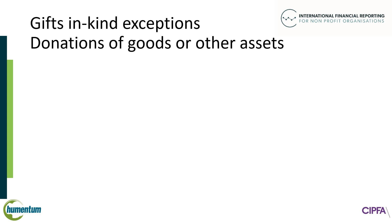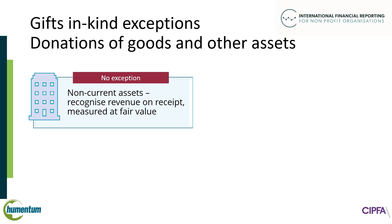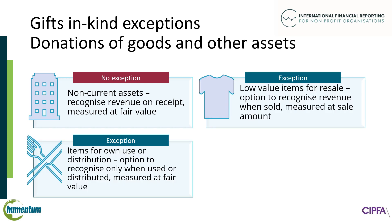Exceptions are proposed to reflect cost-benefit considerations. The cost of reliably measuring goods and other assets when they are received may be more than the value of the information to financial statement users. There are no exceptions for NPOs receiving donations of non-current assets, such as vehicles or buildings. Both the asset and the revenue are recognized on receipt, measured at fair value. The first permitted exception concerns low-value items donated for resale. Recognition can be delayed until the items are sold, measured at the sale amount. This avoids the need to assign a fair value to each item.